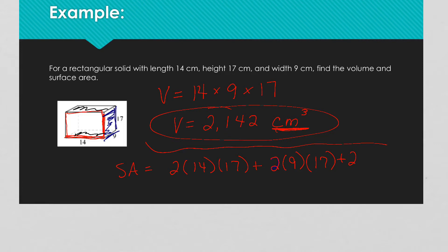Keep in mind that all you're doing is multiplying each of the sides together — you've got 14 and 17, 9 and 17, and 14 and 9. Doing this on my calculator, I end up with 1,034. We're talking area, and area is in square units, so the surface area of this box is 1,034 square centimeters.